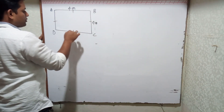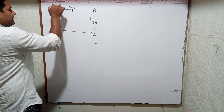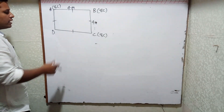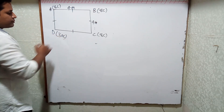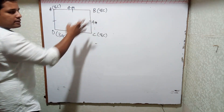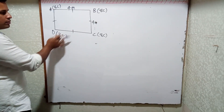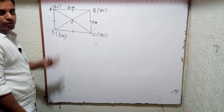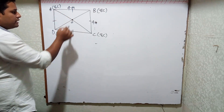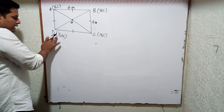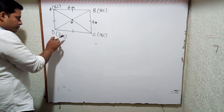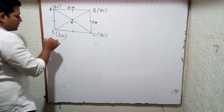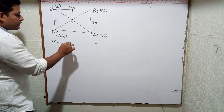At A I have 8 coulombs, at B I have 8 coulombs, at C also 8 coulombs — these are the three charges. At D I have 3 nanocoulombs. A, B, C are the three corners, and I have to bring the charge at D — that is 3 nanocoulombs — to the center O, where the diagonals meet. So the work done is to bring the charge of 3 nanocoulombs from point D to point O.